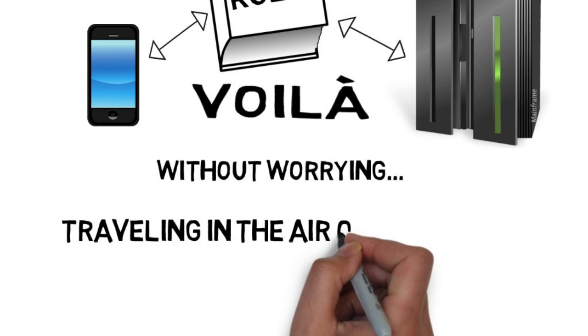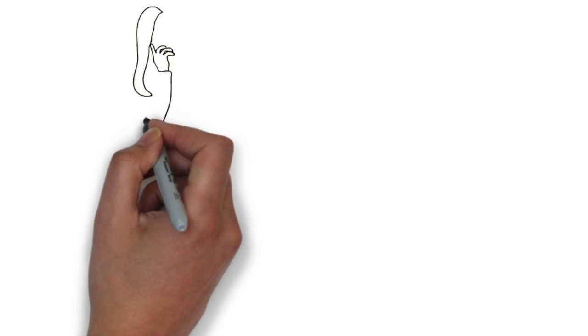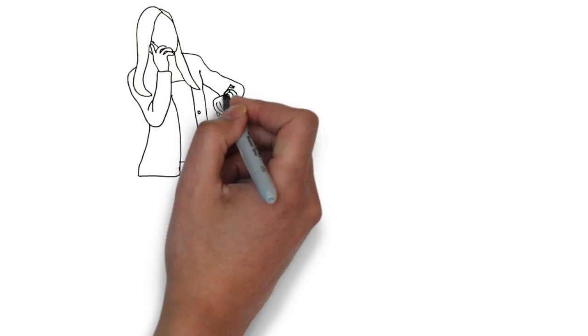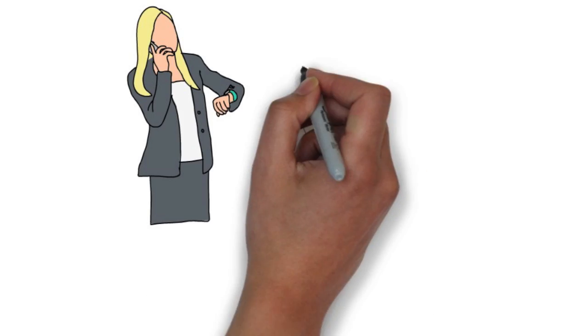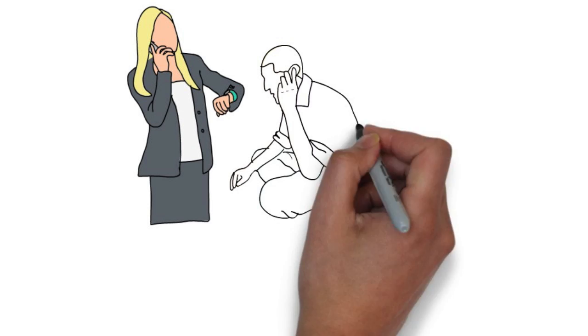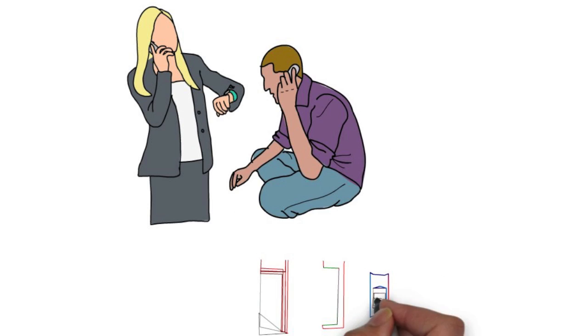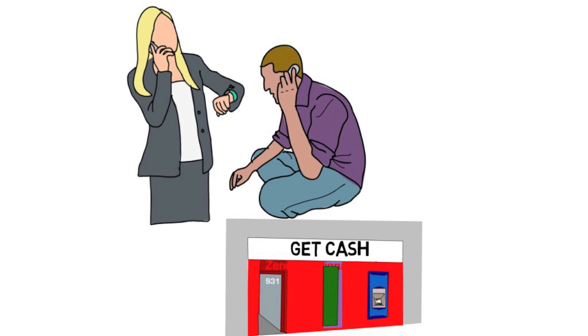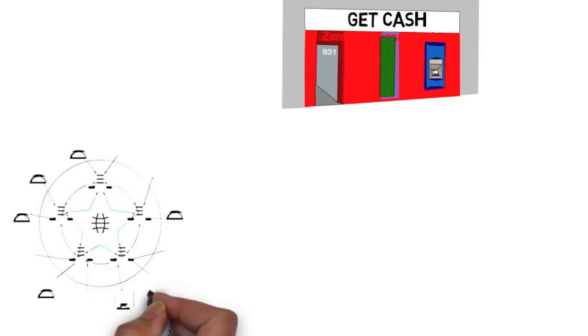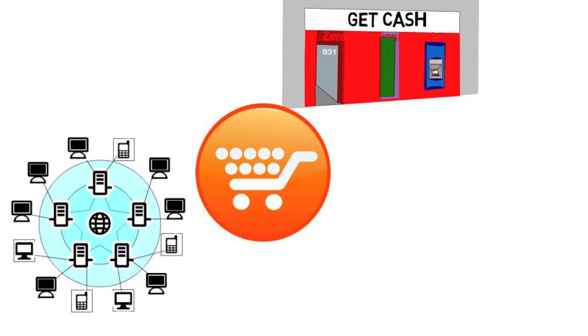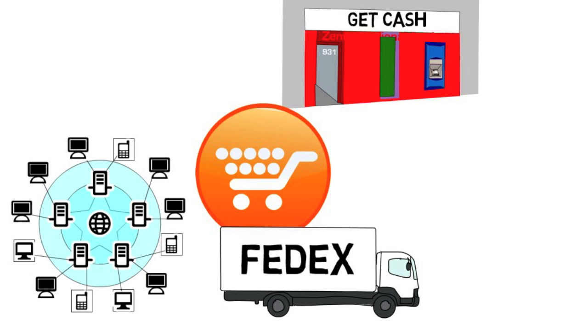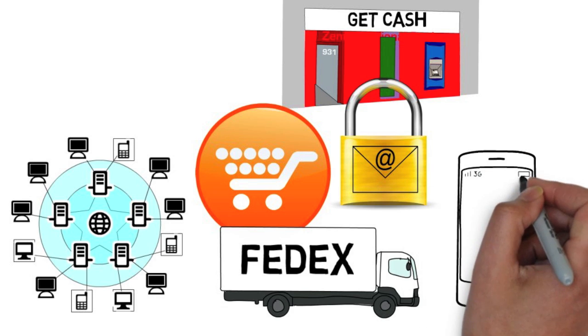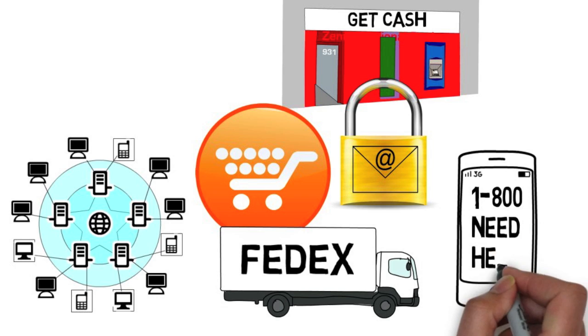And where exactly is ASN-1 being used? Unbeknownst to you, you can hardly live a day without using it. When you place a call with your cell phone, when you get cash from the ATM, manage your network, shop online, receive your FedEx package, send secure emails, place an 800 number call. Everywhere.